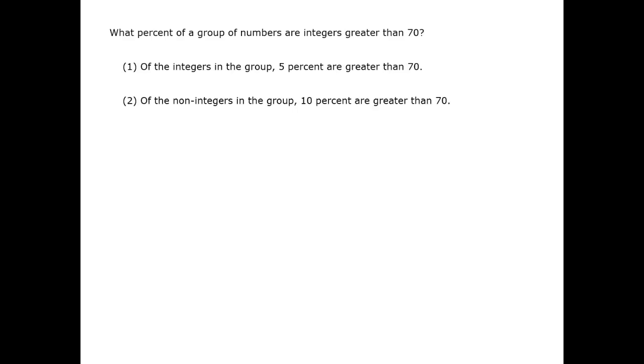For example, we can notice that one statement is about integers and one statement is about non-integers. On the GMAT, we cannot assume that an unspecified number is an integer, a positive or negative whole number, unless we are specifically told so. It could be a non-integer, but we can assume that numbers are real numbers.